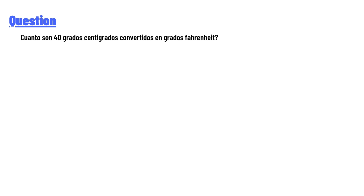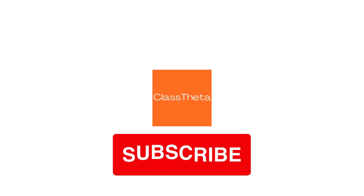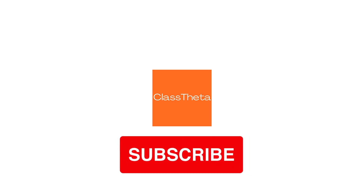40 grados Celsius (centigrade) converted in grados Fahrenheit. The answer of the question is: 40 grados Celsius equals 104 degrees Fahrenheit. This is our correct answer.